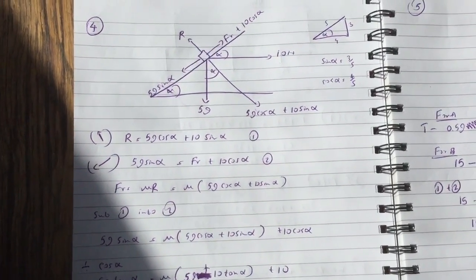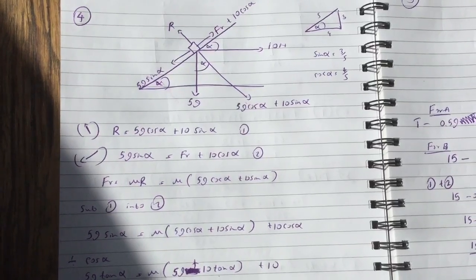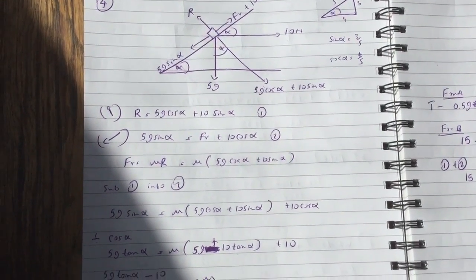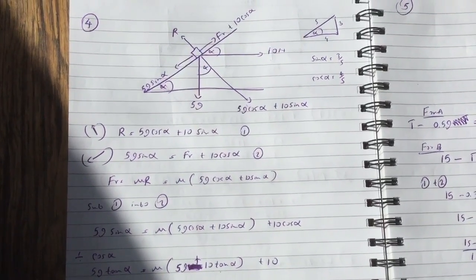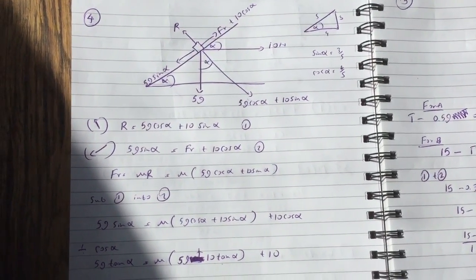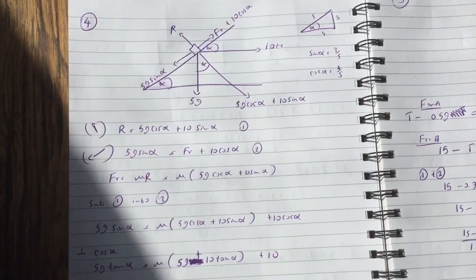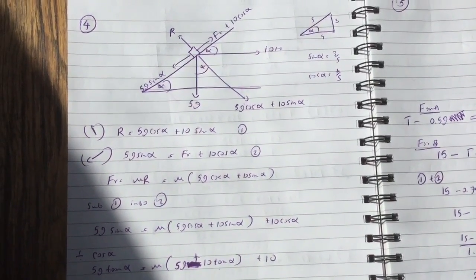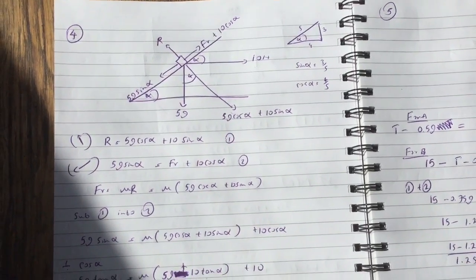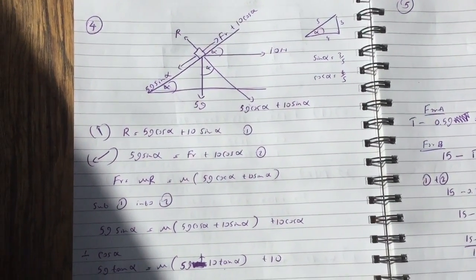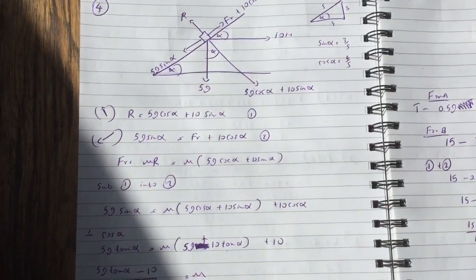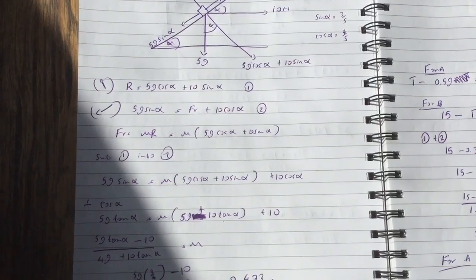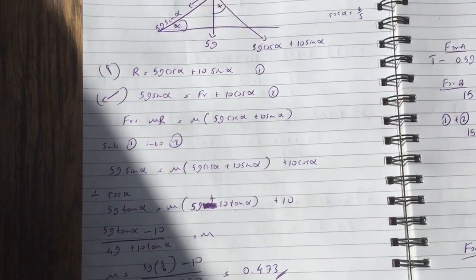So resolving vertically, we've got R equals 5g cos alpha plus 10 sin alpha. Resolving horizontally, we've got 5g sin alpha equals friction plus 10 cos alpha. You can write one force minus the other equal to zero, but since it's in equilibrium, you can just write equals to zero. And so friction equals mu R, which is mu times 5g cos alpha plus 10 sin alpha. So you can see I've called equations one and two there.